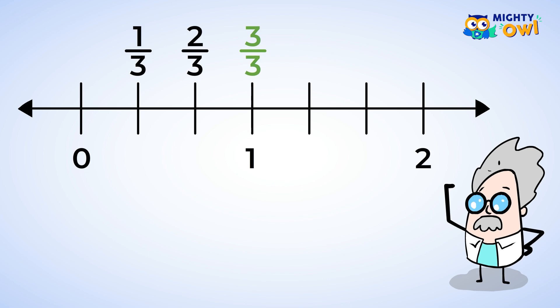Three-thirds is equivalent, or equal, to one. Do you think we can keep going? Look at that! Six-thirds is equivalent to two. So we can write two as two over one, or as six-thirds.